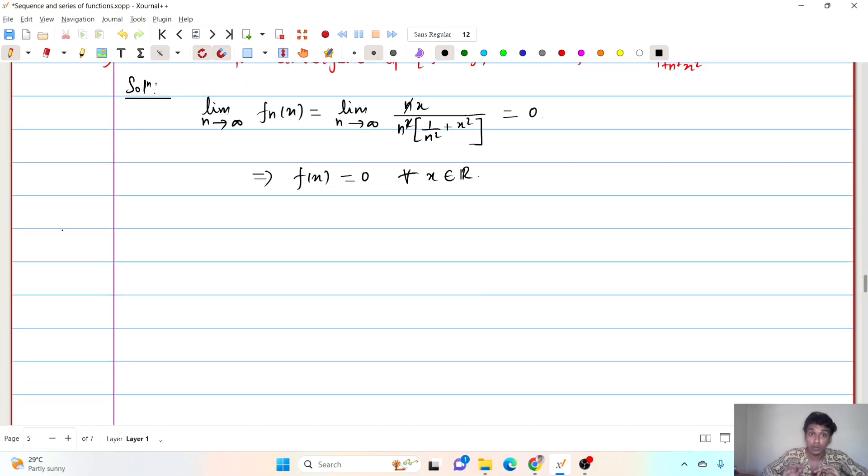Okay. Now, we have proved that it is point-wise convergent. Remember, the implication uniform convergence will imply point-wise convergence. Point-wise convergence need not imply uniform convergence. So, if a particular sequence is not even point-wise convergent, then it cannot be uniform convergent. Using that ideology, we are trying to prove whether it is uniform convergent or not.